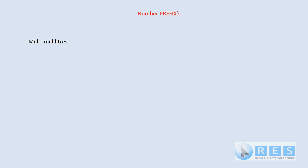The numbering prefixes that you need to learn for your foundation assessment are pretty much used in everyday language. For example, milli — you would have heard of the term millilitres. A millilitre is one thousandth of a litre. A milli is one thousandth and the symbol for milli is a little m. So for example, 50 millivolts is equal to 50 thousandths of a volt. So milli means one thousandth.